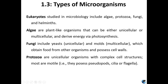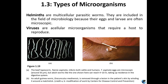Protozoa can have pseudopods, cilia, or flagella for locomotion and motility — they can move around. Helminths are multicellular parasitic worms included in microbiology because their eggs and larvae are often microscopic. Viruses are acellular and require a host to reproduce. There is a whole school of thought arguing whether viruses are even living organisms, since they can't reproduce on their own and lack the cellular structures we're used to seeing in organisms.